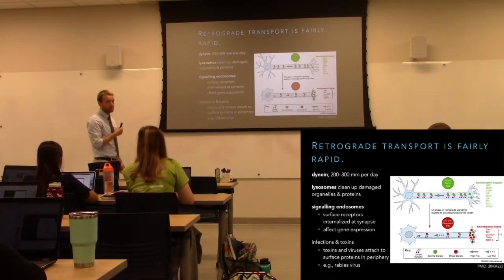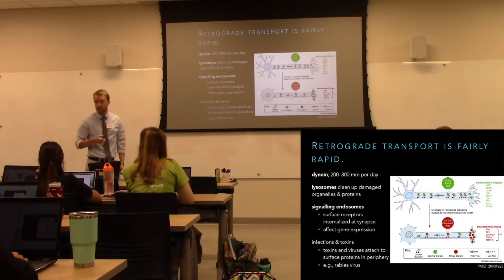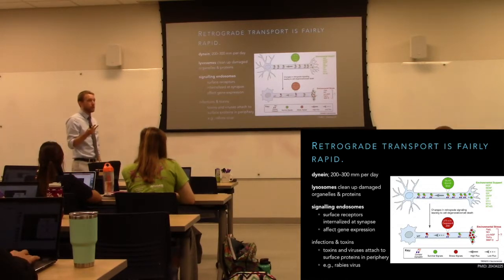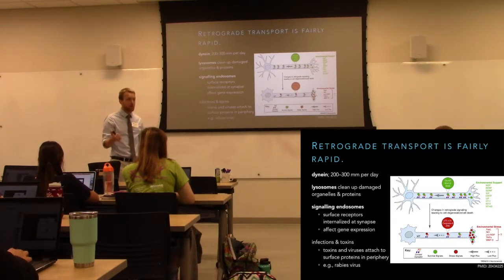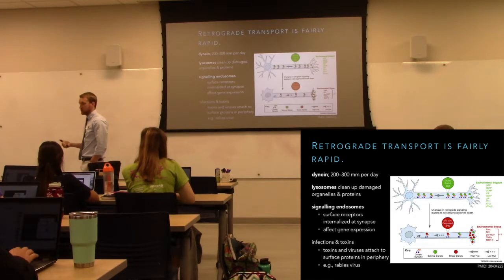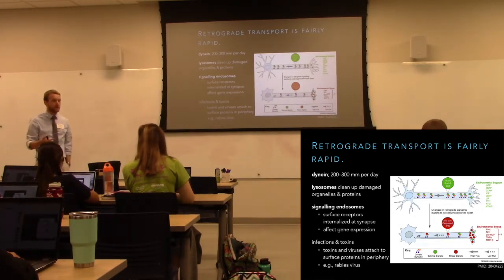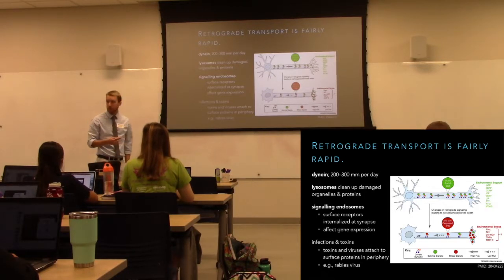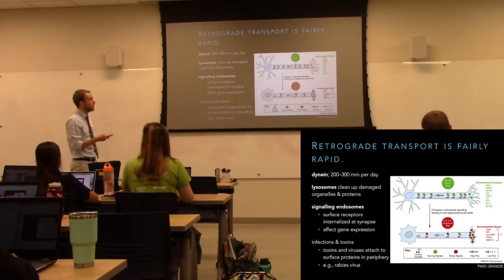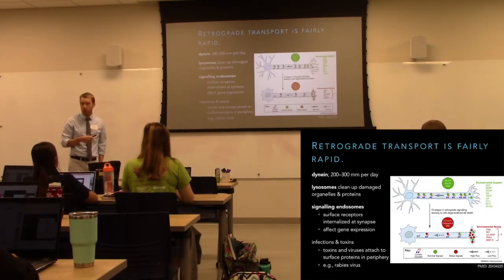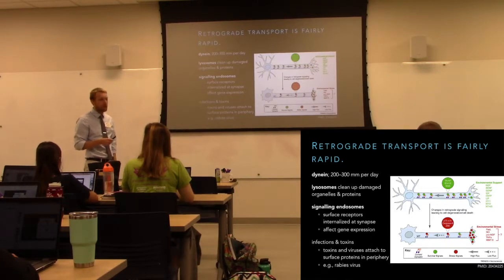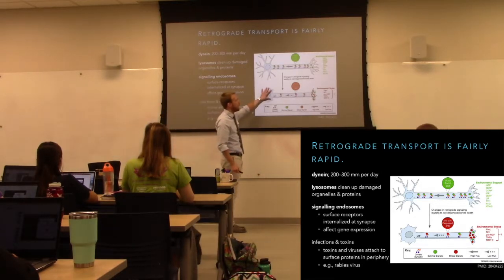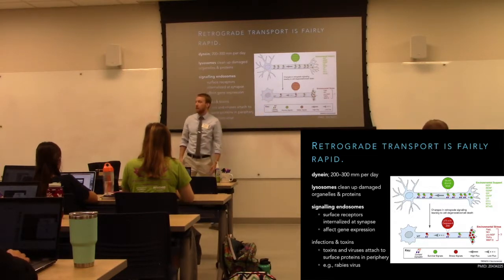Retrograde transport uses dynein, which runs toward the minus end and therefore moves toward the cell body. There are two things we do with retrograde transport. First, we remove old cell components — proteins or organelles. Mitochondria at the presynaptic site still generate free radicals, which break apart macromolecules, and when that happens we need to get rid of them. A protein not functioning properly is of no use — hop on dynein, move back to the cell body, put damaged components into lysosomes, break them apart, and recycle the building blocks. The second function is providing feedback to the nucleus about how active the neuron is.